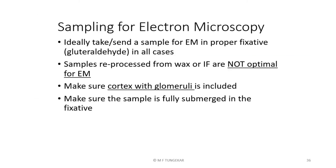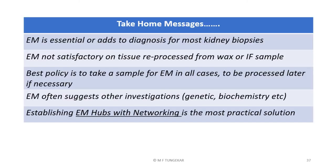A few brief suggestions for sampling for electron microscopy for nephrologists: ideally, take a sample for EM in a proper fixative in all cases — they can then be processed if necessary. Samples reprocessed from wax or IF are not optimal for electron microscopy; full analysis cannot be done on those samples. Also, make sure that cortex with glomeruli is included — although some conditions can be diagnosed by tubular morphology, most diagnoses are rendered on glomerular abnormalities. Also make sure the sample is fully submerged in the fixative.